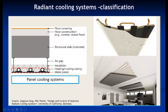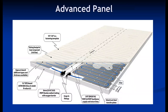The second type is the panel cooling system using separate panels. This system can be used in existing buildings as well. Such panels, embedded with piping, can be easily mounted on the ceiling or floor. This particular structure consists of an air gap, followed by insulation, then heating or cooling tubes, followed by a metal panel — making it flexible and applicable even to existing buildings.